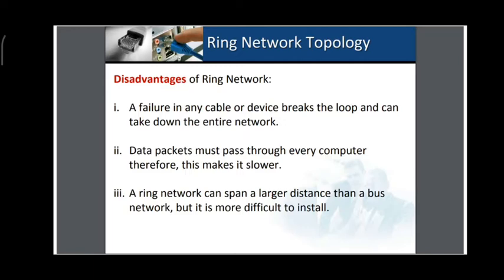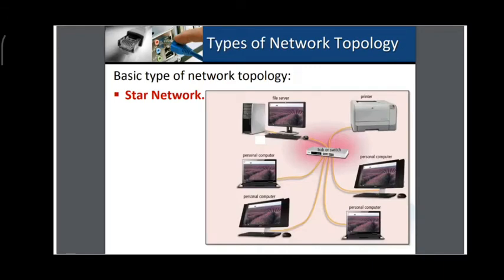Disadvantages of ring topology: a failure in any cable or device breaks the loop and can take down the entire network. Data packets must pass through every computer, which makes transmission relatively slower. A ring network can span a larger distance than a bus network, but it is more difficult to install.